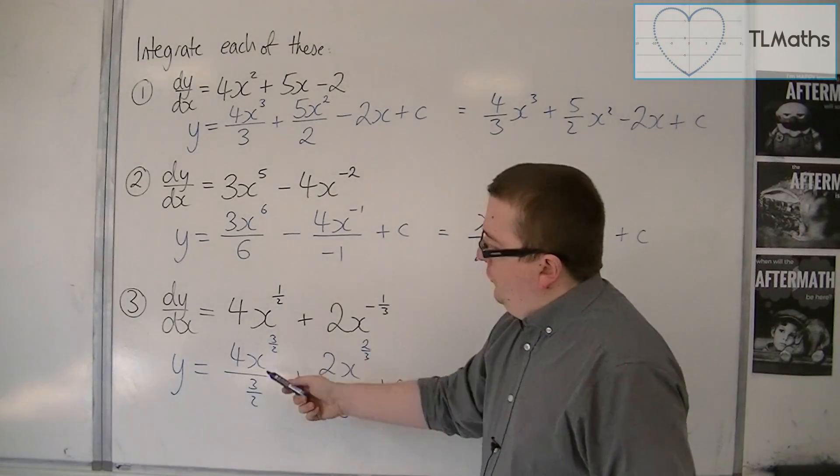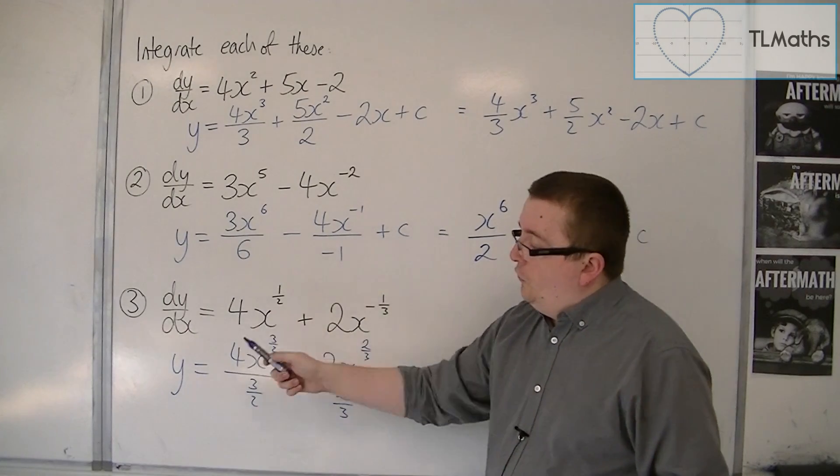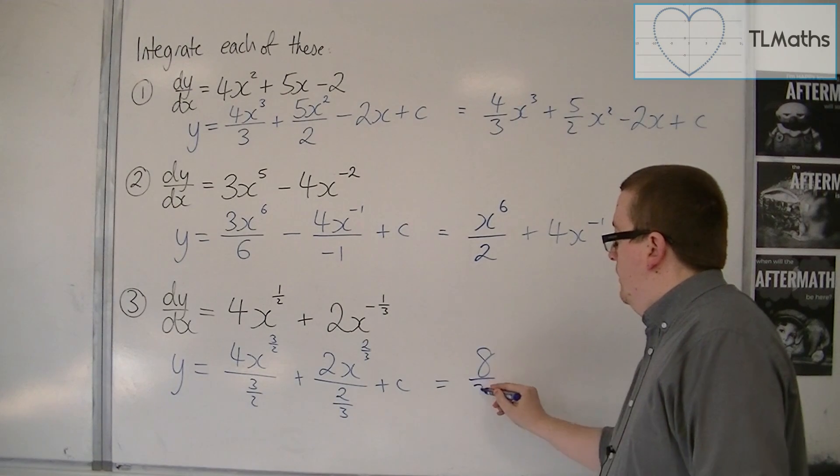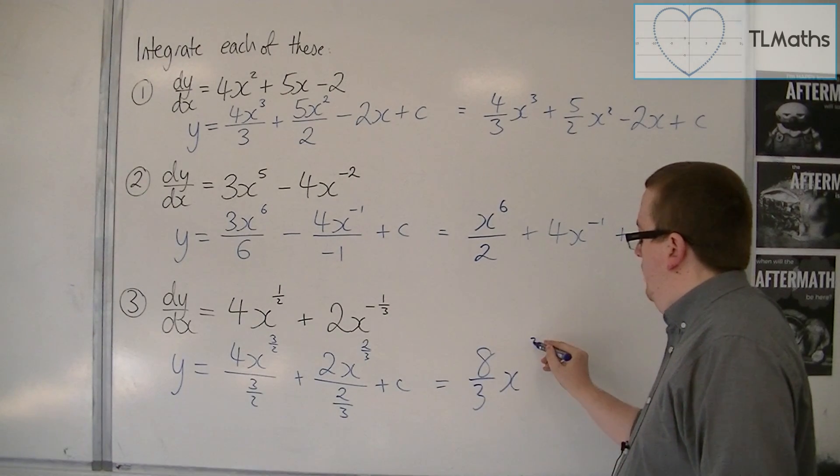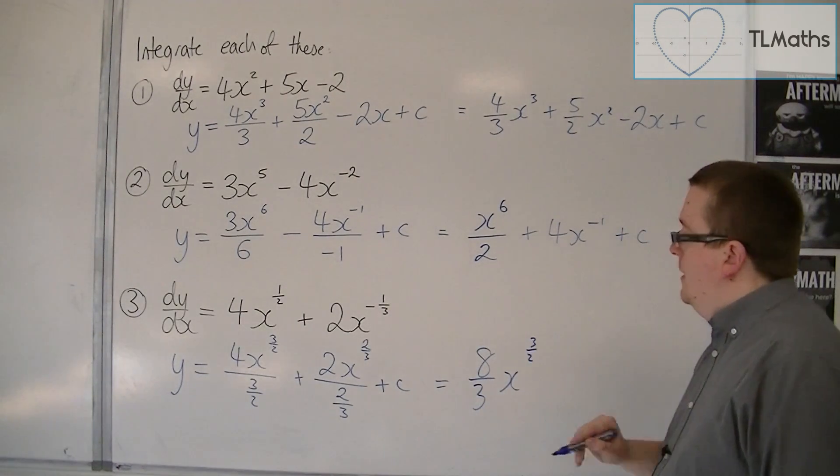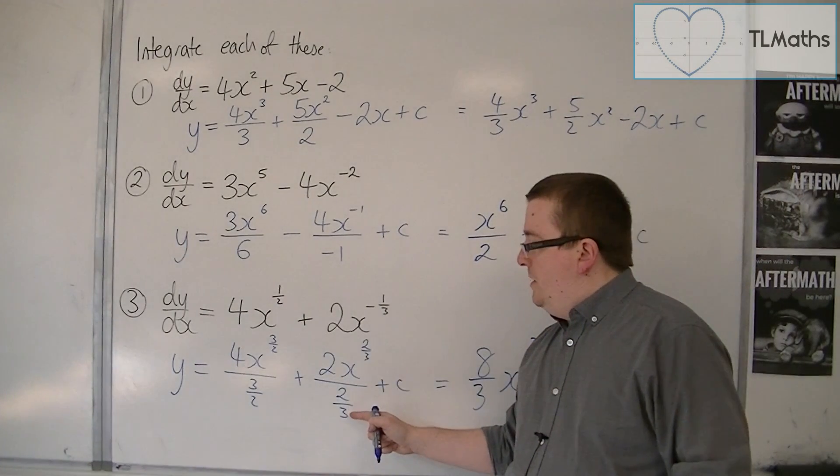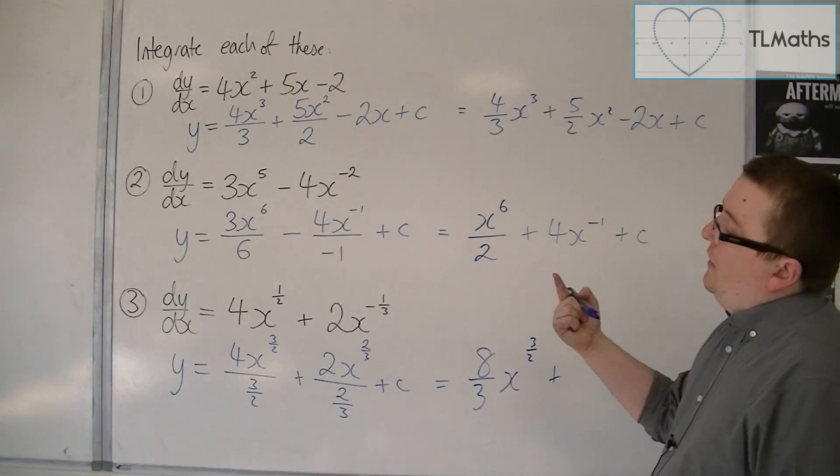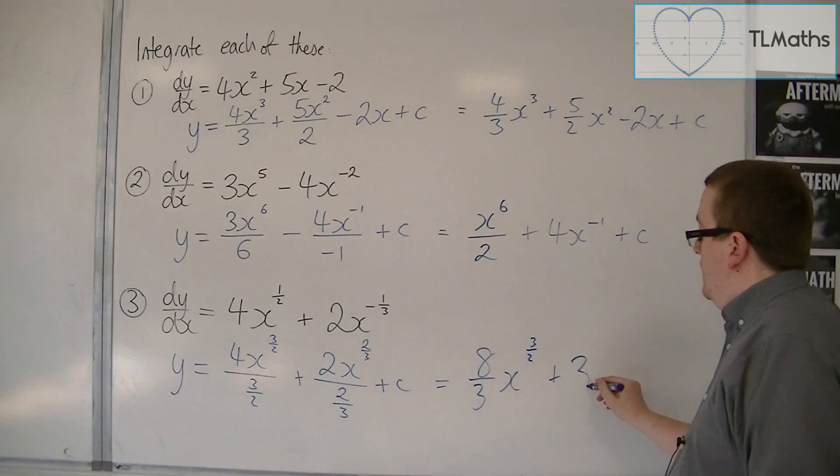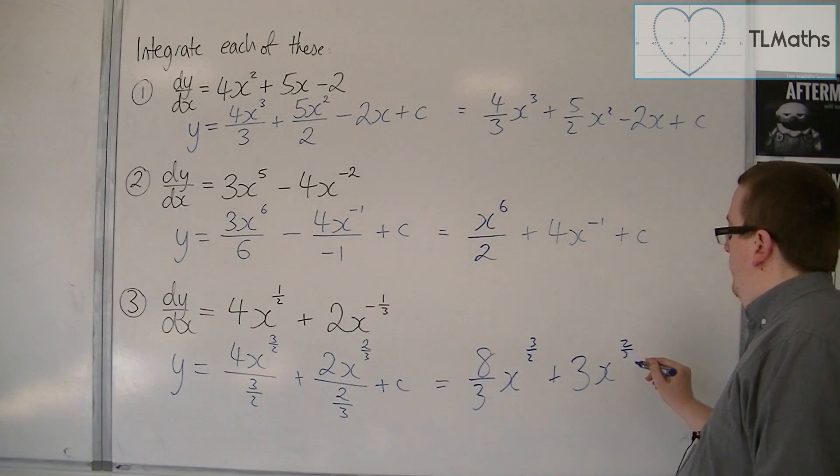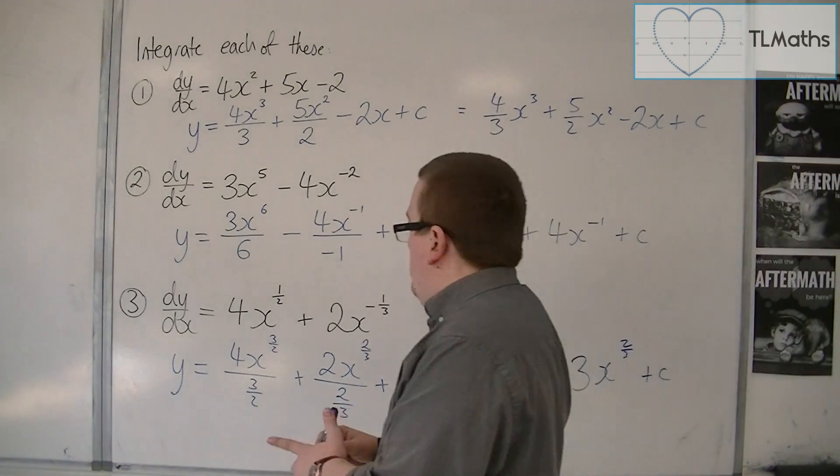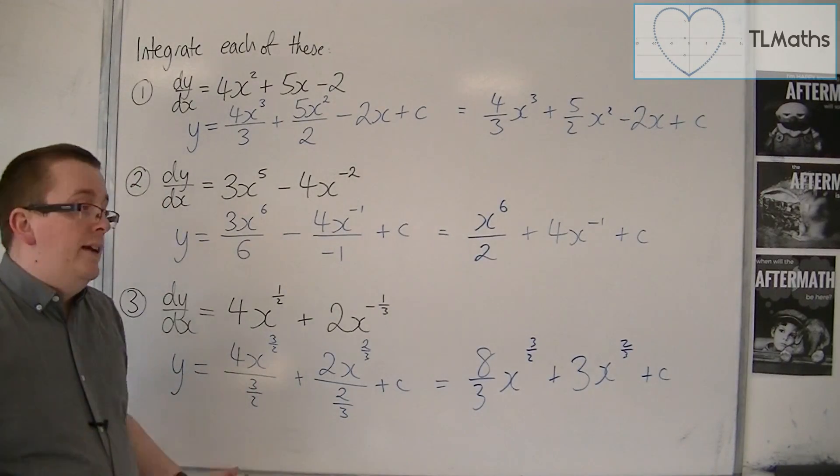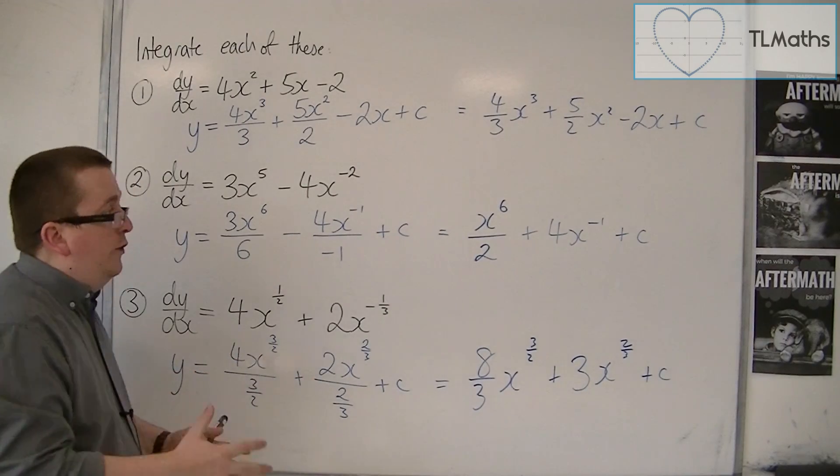Now, 4 divided by 3 halves is the same as 4 times 2 thirds, which is 8 thirds. So we have 8 thirds x to the 3 halves, plus 2 divided by 2 thirds is the same as 2 times 3 halves. That's 6 halves, which is 3. So 3x to the 2 thirds plus c. Now remember, in simplifying these, you do have access to a calculator, so there's no excuse for getting those fractions wrong.